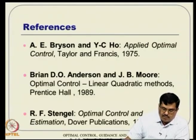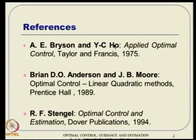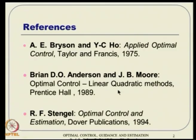This material is taken from these books. The first is a classical book, heavily referred to in a lot of papers — probably the most referred book ever in control theory. Some topics are also derived from Anderson and Moore, especially for linear quadratic methods. A little bit of concept can also be seen in Optimal Control Estimation from Stengel, and some example problems are taken from Frank Lewis.